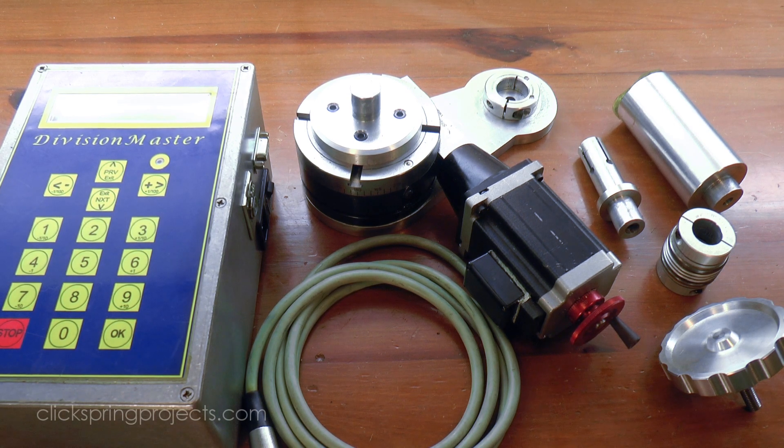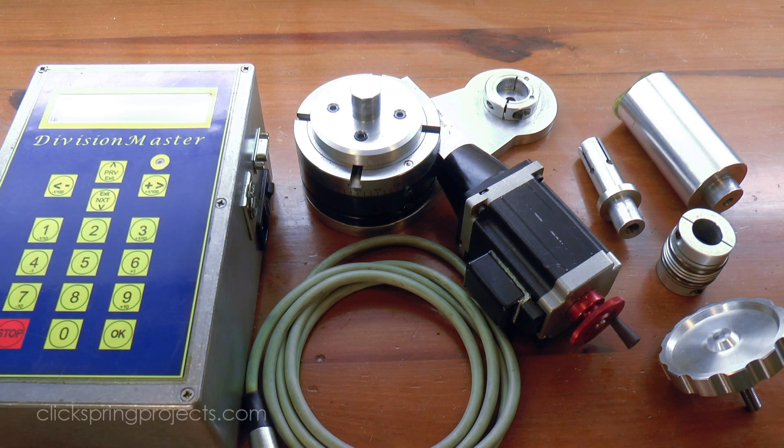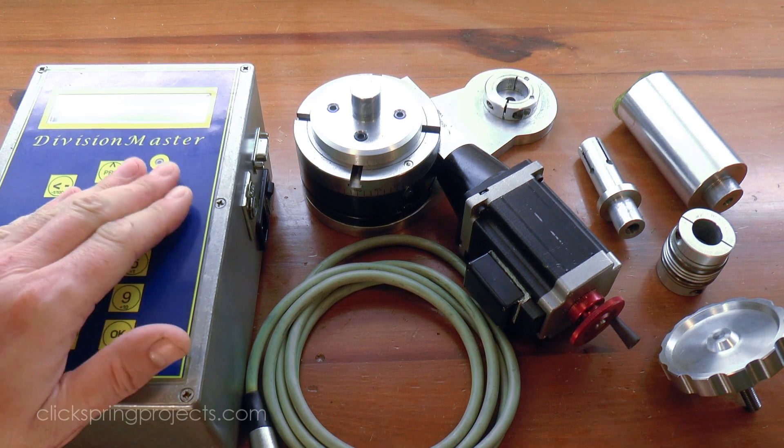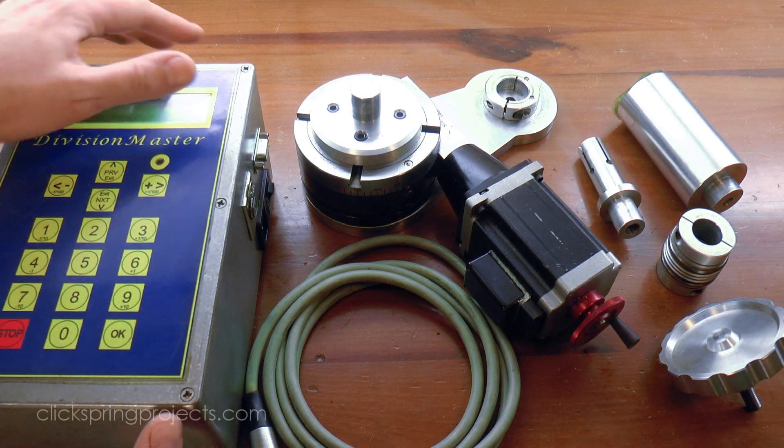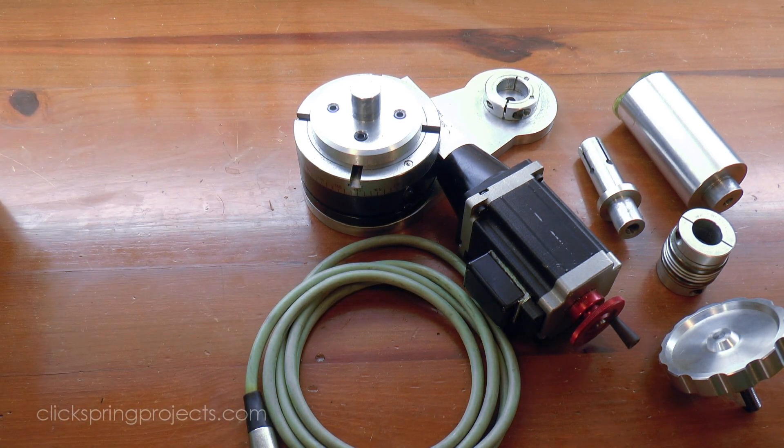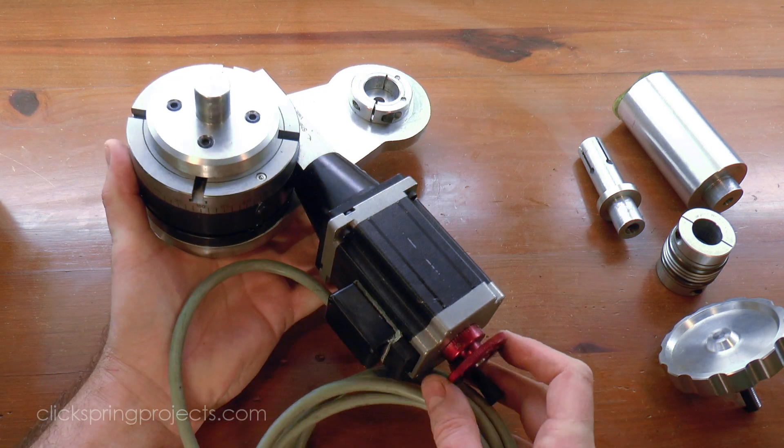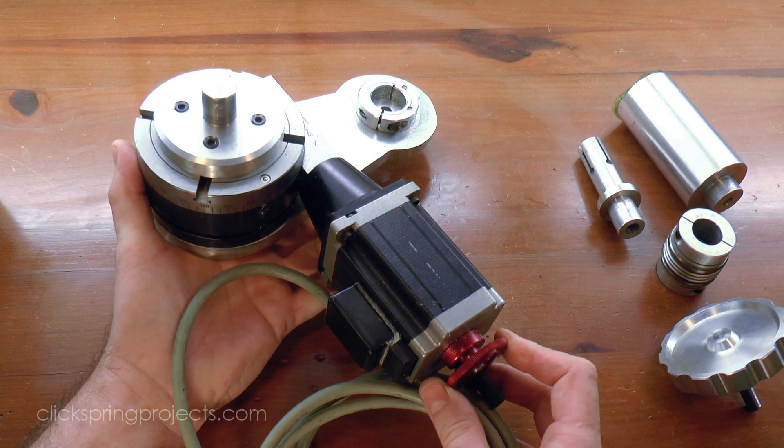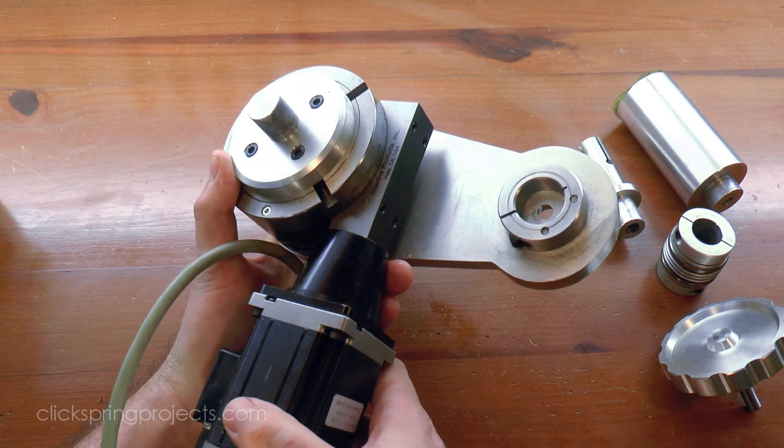So here's the whole system in pieces before I attach it to the lathe. The key component of course is the CNC control box, which I'll show in more detail once it's all plugged in. That drives a 300Ncm NEMA 28 stepper motor, which in turn drives the Sherline rotary table.